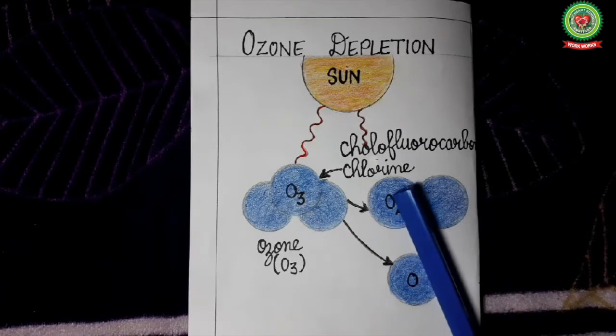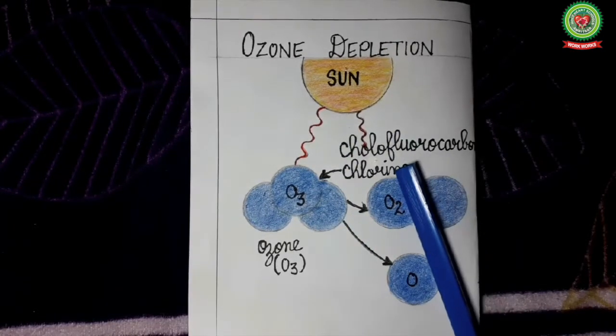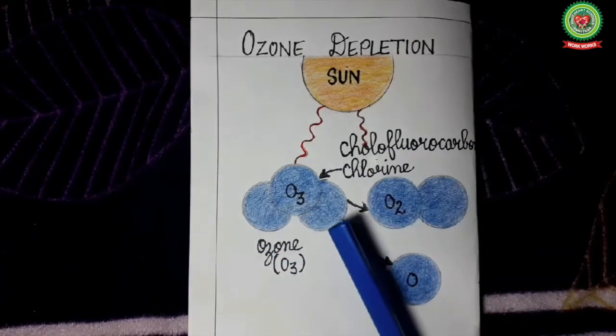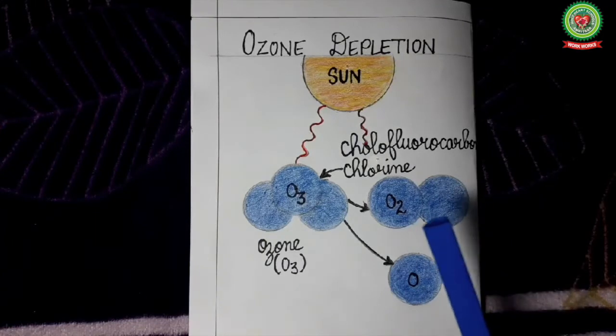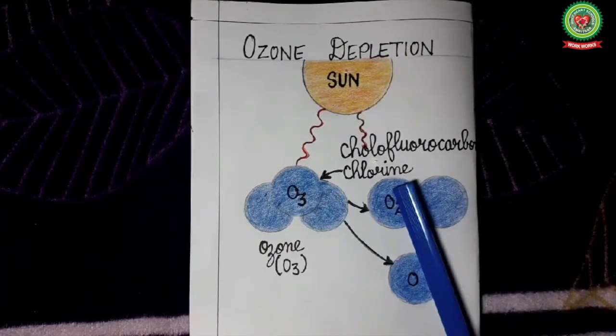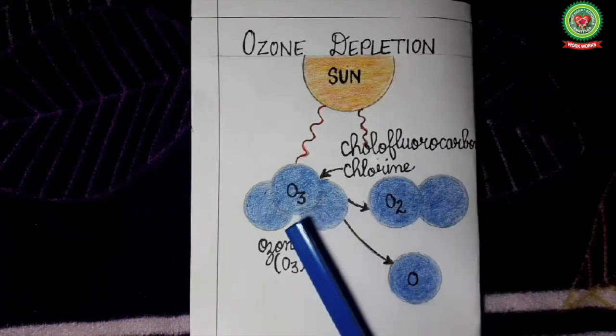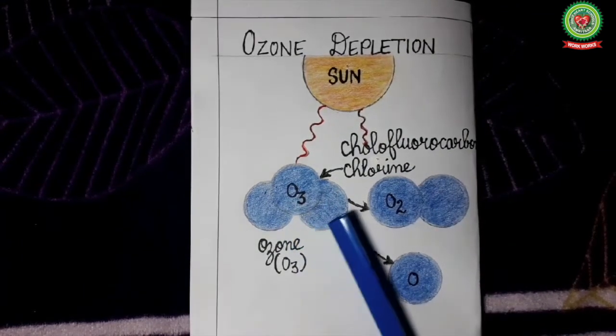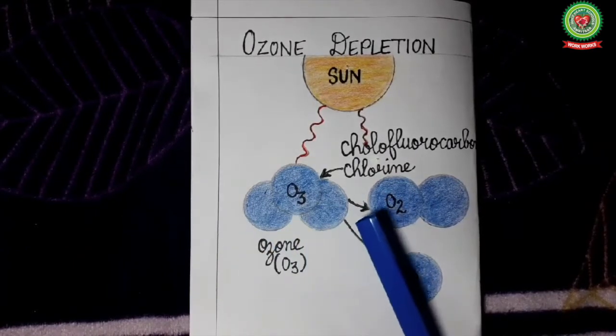Chlorine is very dangerous because chlorine can break down the ozone molecules. A single atom of chlorine can break down around 1 lakh molecules of ozone. So chlorine is depleting the ozone layer at a fast rate.